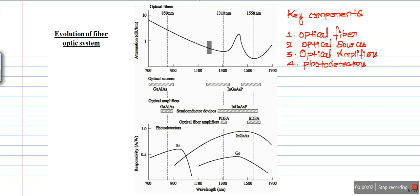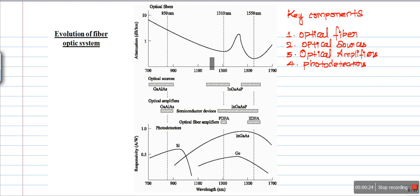Hello everyone. In the previous lecture I discussed introduction to optical communication. In this lecture I will give you a brief discussion about the evolution of optical communication systems. There are four key components of an optical communication link: optical fibers, optical sources, optical amplifiers, and photo detectors. We are going to see the history about these four key components.